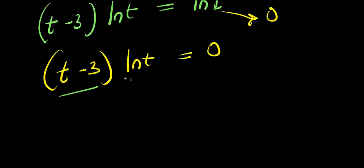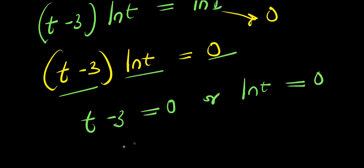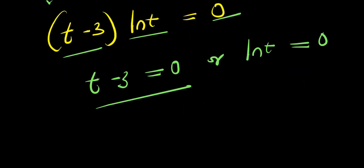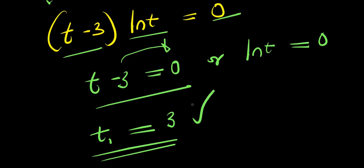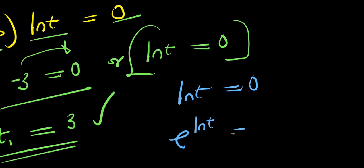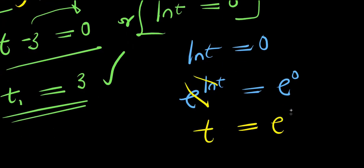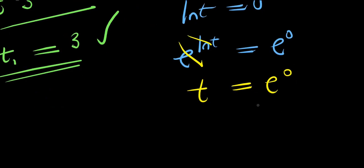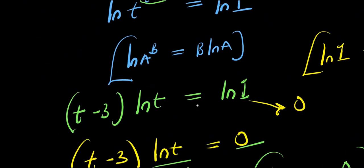Now, if this is the case, I can equate each factor to 0. I have t minus 3 equals 0, or I have ln t equals 0. If t minus 3 equals 0, solving for t is very simple: I take the negative 3 over here and it becomes positive 3, so t equals 3. This gives us the same solution as earlier — that is t1, which is 3. Now let's consider ln of t equals 0. I can eliminate the ln by making use of e: e power ln t equals e power 0. The e and ln cancel out, giving t equals e power 0, and any number raised to 0 is 1, so t equals 1. This is still giving us only two solutions, which are 3 and 1.